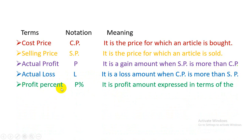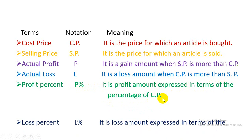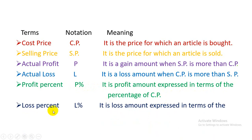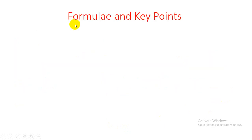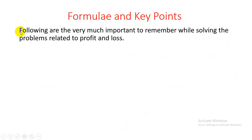Profit percent (P%): it is the profit amount expressed in terms of the percentage of CP. Loss percent (L%): it is the loss amount expressed in terms of the percentage of CP. The following formulas and key points are very important to remember while solving problems related to profit and loss.